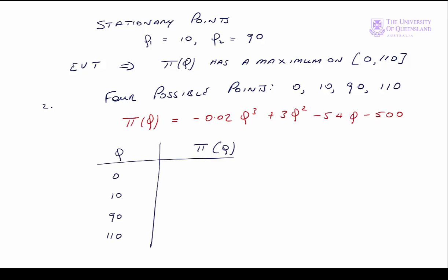It's useful to draw up a little table. So we have q and π q. When q equals 0, what we're left with are the fixed costs. So π q will be minus 500. We evaluate π q at q equals 10. That's equal to minus 760.